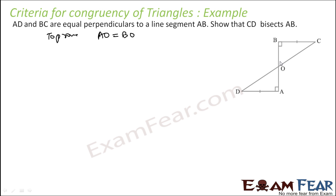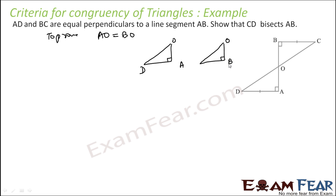So we have to prove that these two triangles are congruent. Let's draw in this fashion — draw these two triangles. This is OAD. Now angle A is 90 degrees, angle B is 90 degrees. AD and BC are equal — that is given.